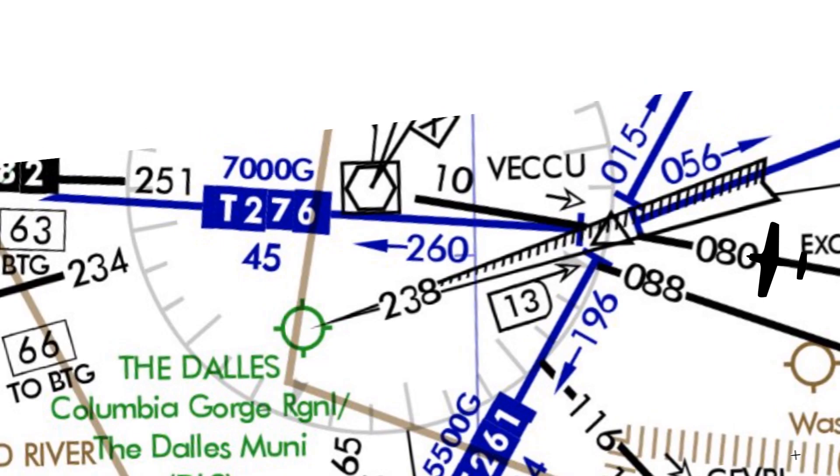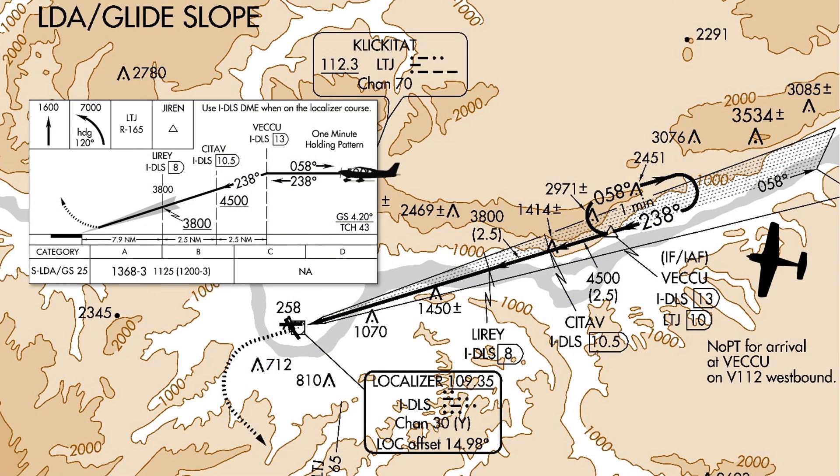So in the cockpit, we'd have tuned into both. From here, there aren't too many surprises regarding flying the approach. We won't be doing the procedure turn, having arrived on Victor 112 westbound, but coming from another area, we may need to use the procedure turn to descend from a higher enroute altitude given all the surrounding terrain.